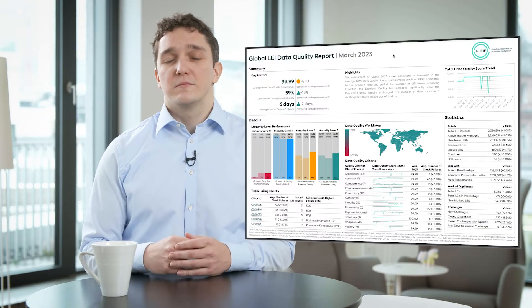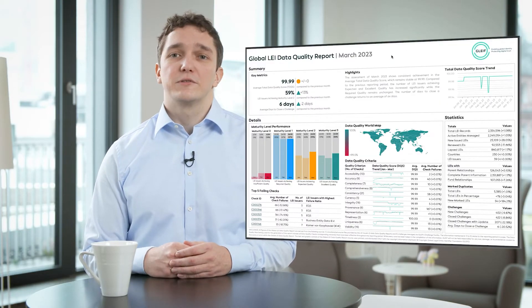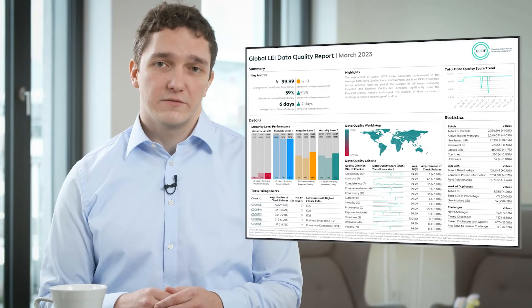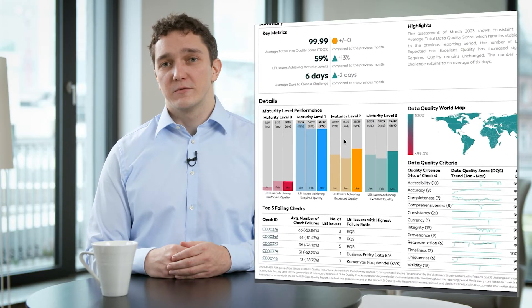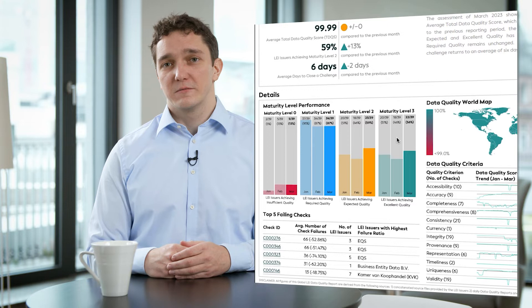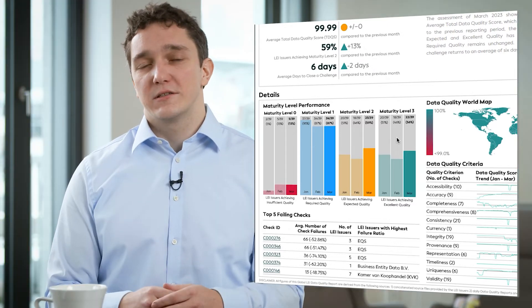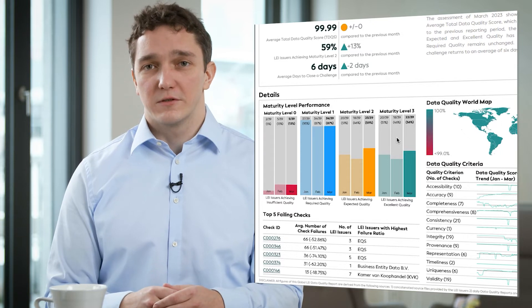To more easily monitor the data quality in our system, we introduced several KPIs. Two of them are the maturity level performance and the total data quality score. Let's begin with the maturity level performance. Each check has been assigned a maturity level between one and three. The maturity level indicates the complexity and importance of a data quality check.